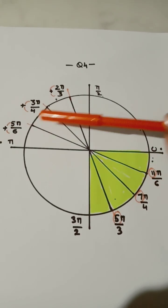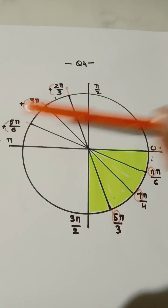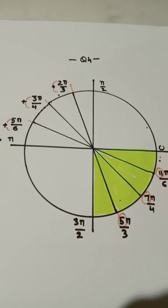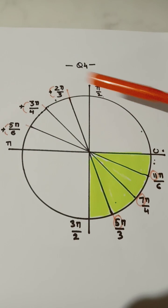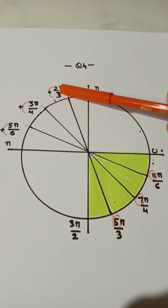In quadrant 4, we'll have to add the top and the bottom number to find the top number in quadrant 4, which is 5 plus 6 is 11. And then 3 plus 4 is 7 and 2 plus 3 is 5.